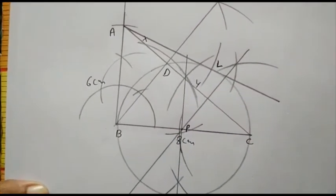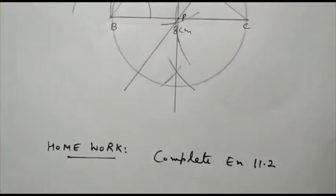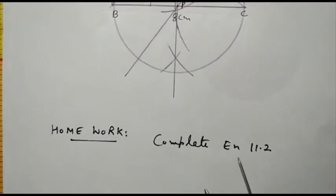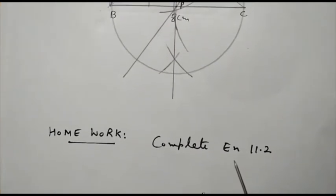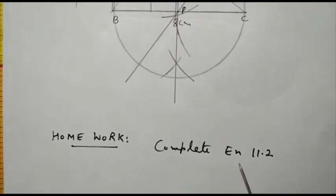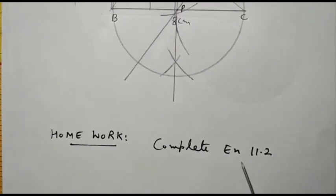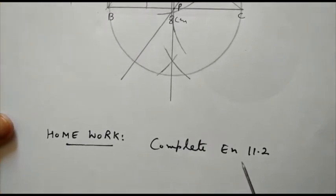In this way we are able to draw the tangents to the circumcircle. So in your homework you will complete Exercise 11.2, and this was all about Chapter 11 constructions. Thank you.